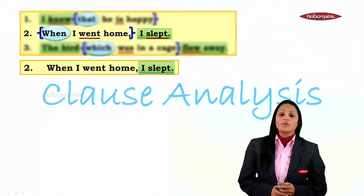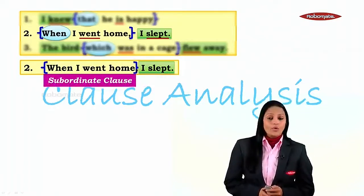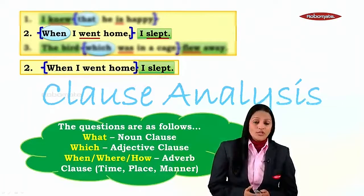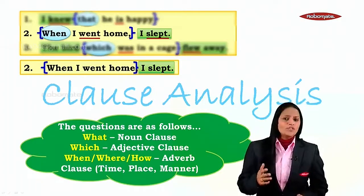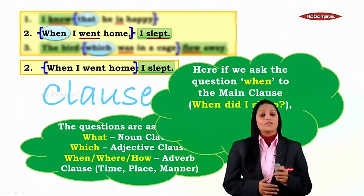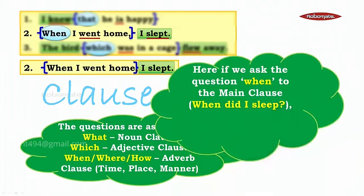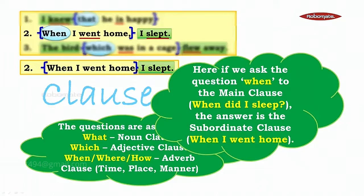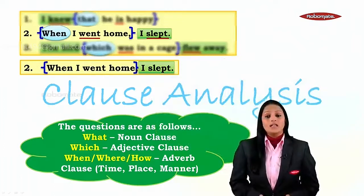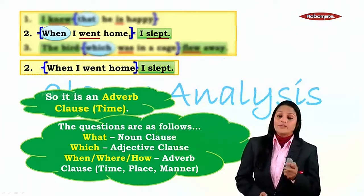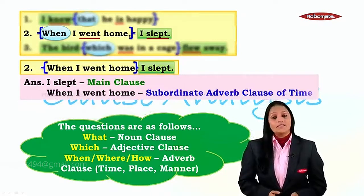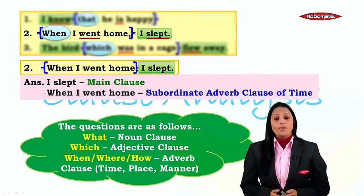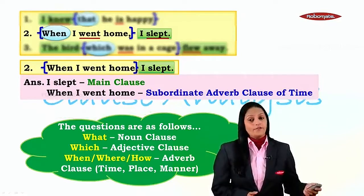Let's take another example: 'When I went home, I slept.' We know 'I slept' is the main clause and 'when I went home' is the subordinate clause. Now, among the questions — what, which, when, where, how — which one suits here? We ask 'when' to the main clause: when did I sleep? The answer is 'when I went home.' It answers the question 'when', therefore it is an adverb clause of time. Answer: 'I slept' — main clause; 'when I went home' — subordinate adverb clause of time.